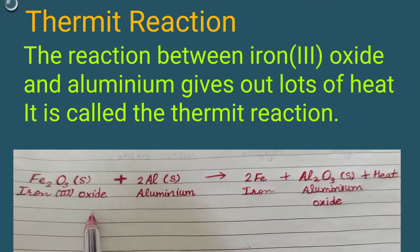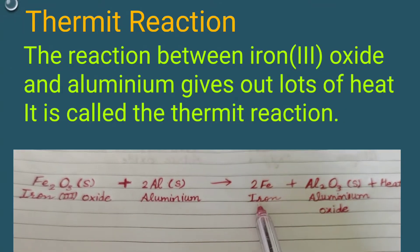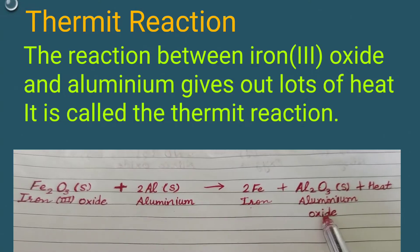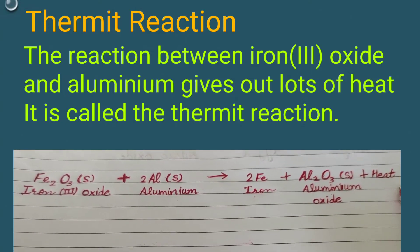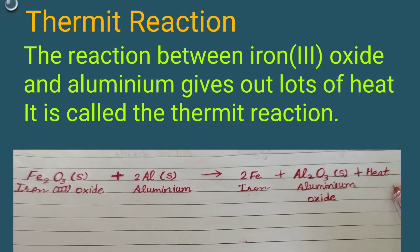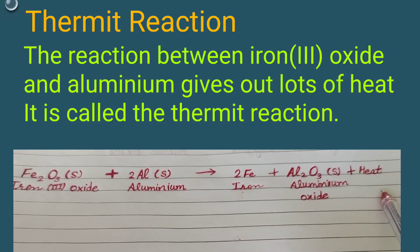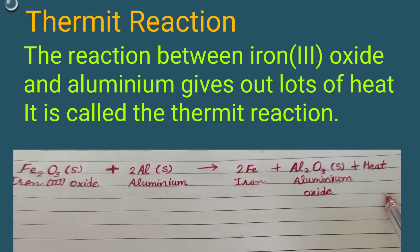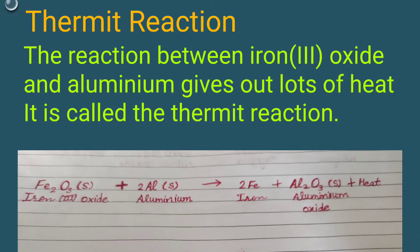When iron oxide reacts with aluminium, it produces iron and aluminium oxide plus a lot of heat. This reaction is an exothermic reaction because it produces a lot of heat. Reactions that produce a lot of heat are known as thermit reactions.